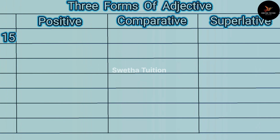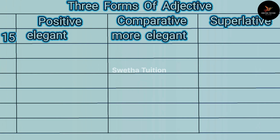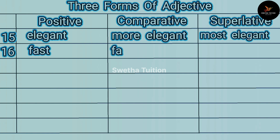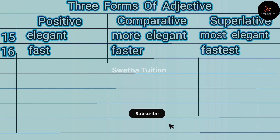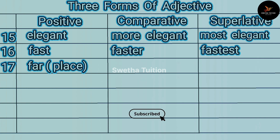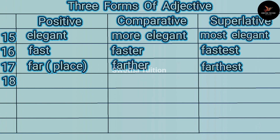Number thirteen: evil, worse, worst. Number fourteen: easy, easier, easiest. Number fifteen: elegant, more elegant, most elegant. Number sixteen: fast, faster, fastest. Number seventeen: far (for place) further, furthest. Number eighteen: far (for time) further, furthest.